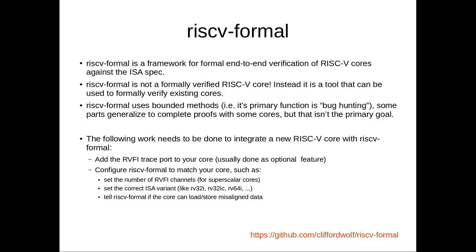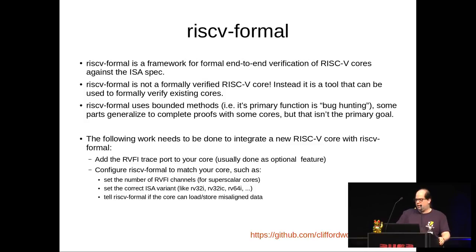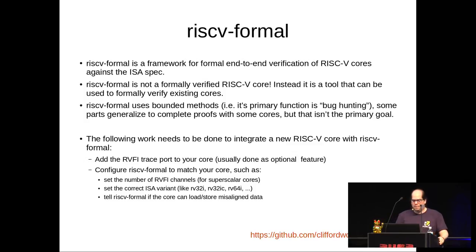To integrate a processor with RISC-V Formal, you need to do two things. You need to add a special trace port to your processor called the RVFI trace port - the RISC-V Formal Interface trace port. And you have to configure RISC-V Formal so it understands the attributes of your processor. For example, RISC-V is available in 32-bit and 64-bit versions, so you tell RISC-V Formal which you're verifying. RISC-V is also a modular ISA with extensions, and you have to tell it which extensions your processor implements.